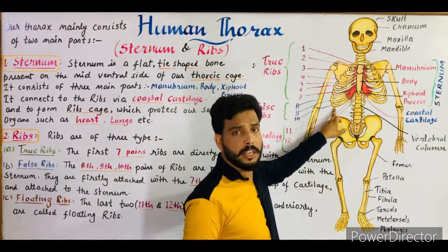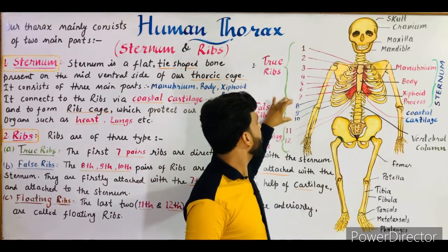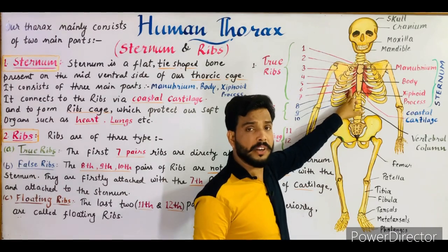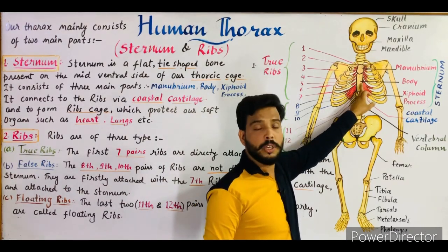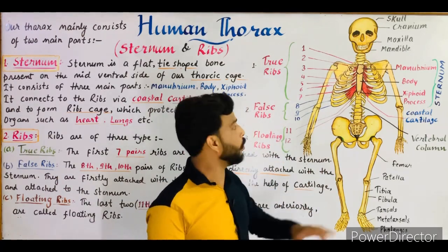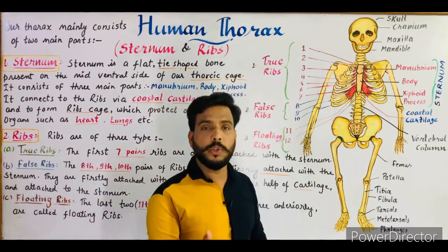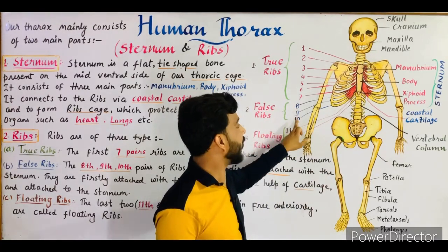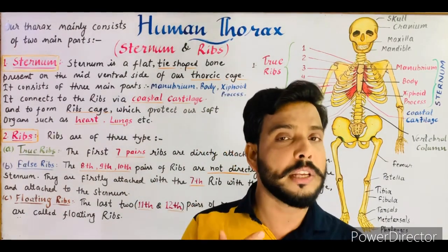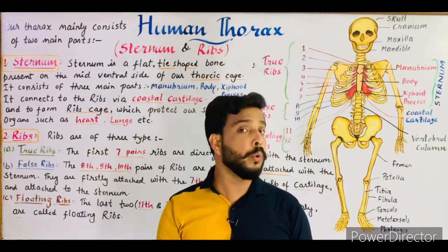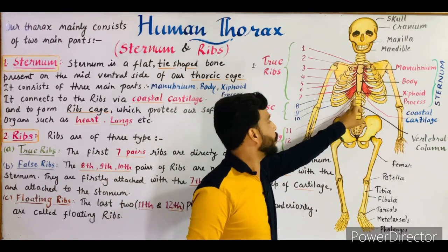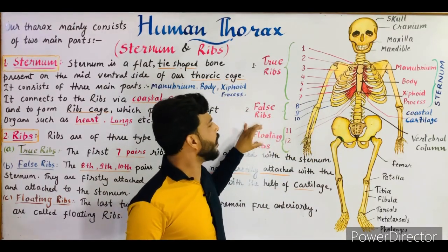Pairs eight, nine, and ten are first attached with the seventh pair of ribs with the help of cartilage, and then they attach to the sternum. So they are not directly attached to the sternum, hence they are known as false ribs. There are three pairs of false ribs on each side — pairs eight, nine, and ten. Those ribs which are not directly attached to the sternum but attach via the seventh rib are known as false ribs.